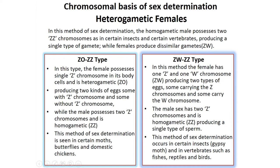The next type is ZW/ZZ. In this method, the female has one Z and one W chromosome, producing two types of eggs — some carrying the Z chromosome and some carrying the W chromosome. The male has two Z chromosomes and is homogametic, producing only one type of sperm. This method occurs in certain insects such as the gypsy moth, and in vertebrates such as fishes, reptiles, and birds.